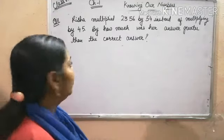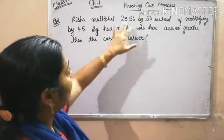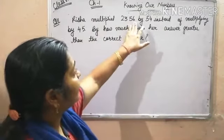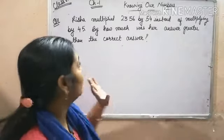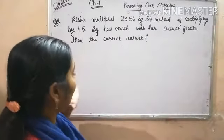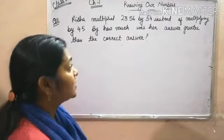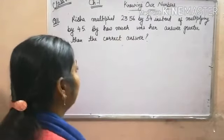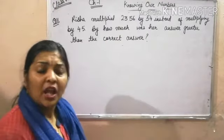In this problem, Risha multiplied 2356 by 54 instead of multiplying by 45. By how much was her answer greater than the correct answer?